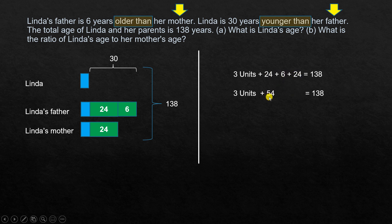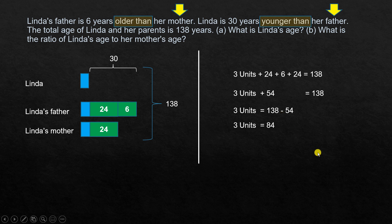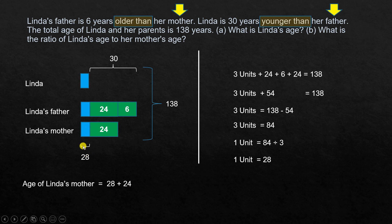Adding the known values: 24 plus 6 plus 24 equals 54, so three units plus 54 equals 138. Subtracting 54 from both sides gives three units equals 84, and one unit equals 84 divided by 3, which is 28. So Linda's age is 28. Linda's mother's age is 28 plus 24, which is 52 years old.